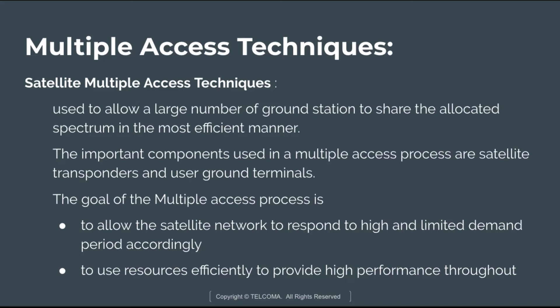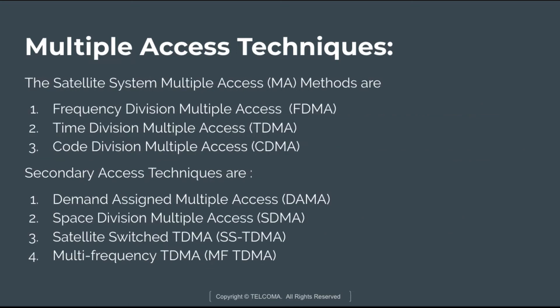Satellite multiple access techniques are used to allow a large number of ground stations to share the allocated spectrum in the most efficient manner. Since the spectrum is limited, sharing is required to increase the capacity of satellite links. The most important common components used in the multiple access process are the satellite transponder and the user ground terminal. The goal of the multiple access process is to allow the satellite network to respond to high and limited demand periods accordingly and to use resources efficiently to provide high performance throughput.